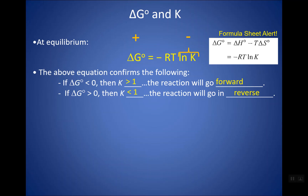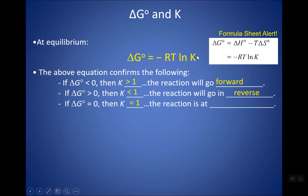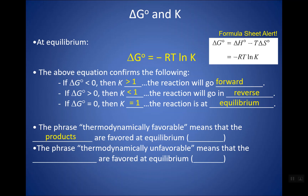If delta G is bigger than zero, for delta G to be a positive number, the natural log of K should be a negative number so the two negatives cancel out. Therefore, whether I say delta G is positive or K is much less than 1, the reaction would go in reverse. Thermodynamically favorable means the products are favored at equilibrium: negative delta G or K bigger than 1 both mean thermodynamically favorable going forward. Thermodynamically unfavorable means delta G is positive or K is much less than 1.